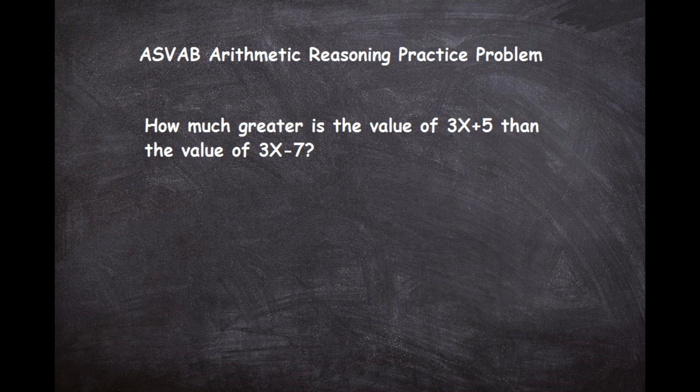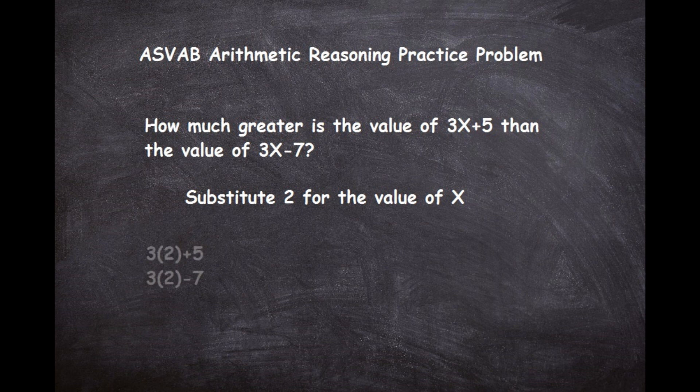We know the 3X value is going to be the same in each, but in one case we're adding 5 and in the other case we're subtracting 7. So pretty much if we just substitute a number in for the value of X then we can solve this pretty easily. Let's pick an easy number like 1 or 2. Let's take 2. Let's substitute 2 for the value of X, which would give us 3 times 2 plus 5, and 3 times 2 minus 7.